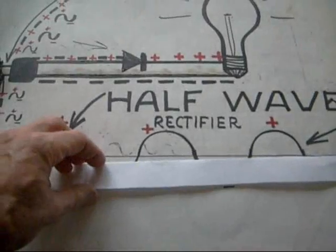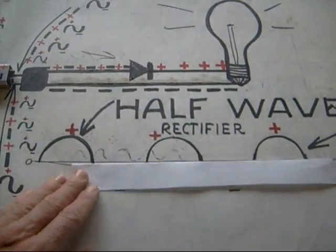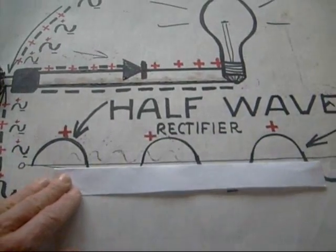And the waveform, it would cut half the waveform like this. Depending on which side had the diode, it would either take this half off or this half down here.